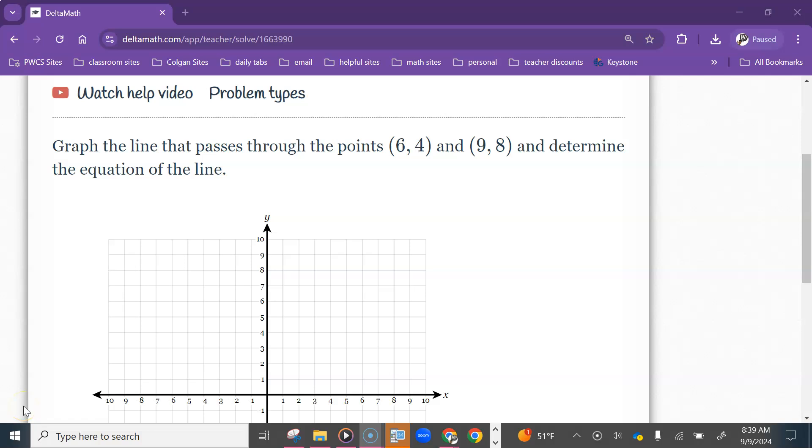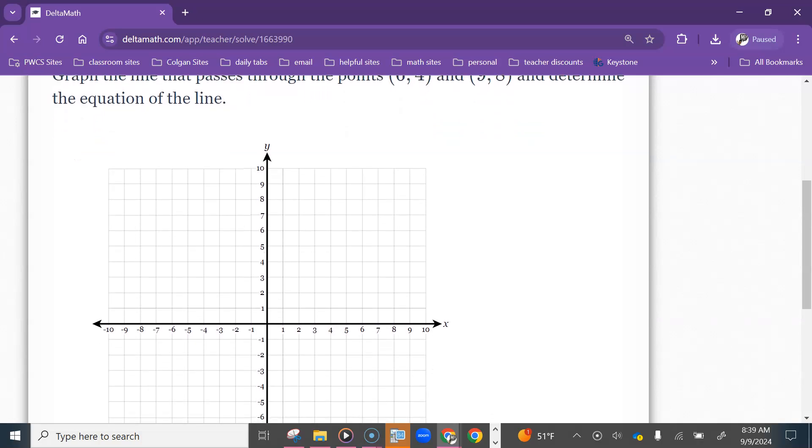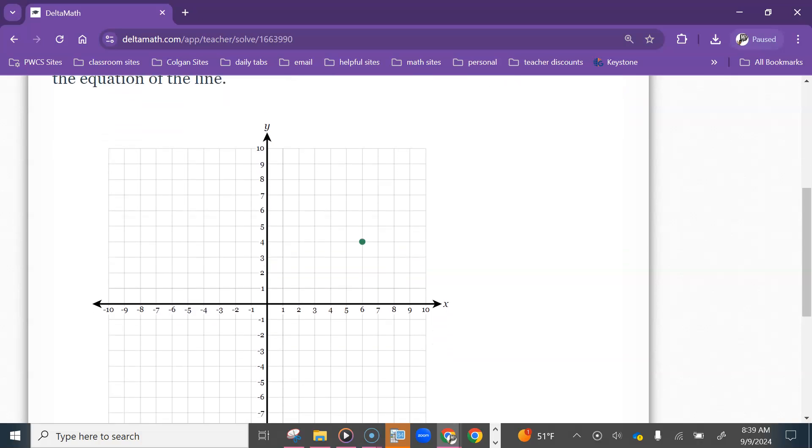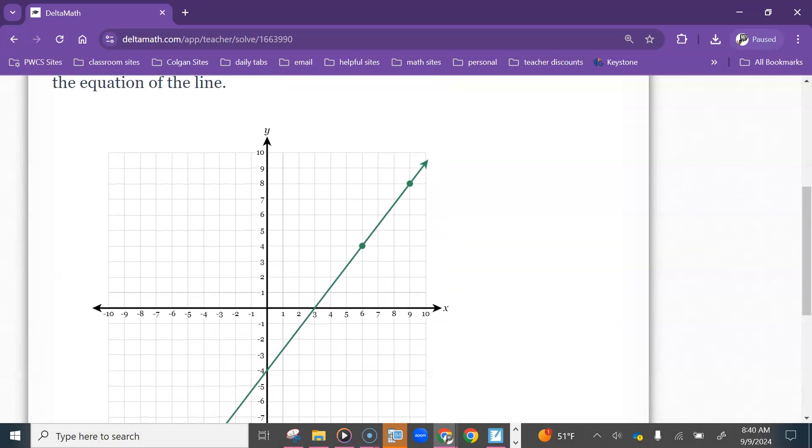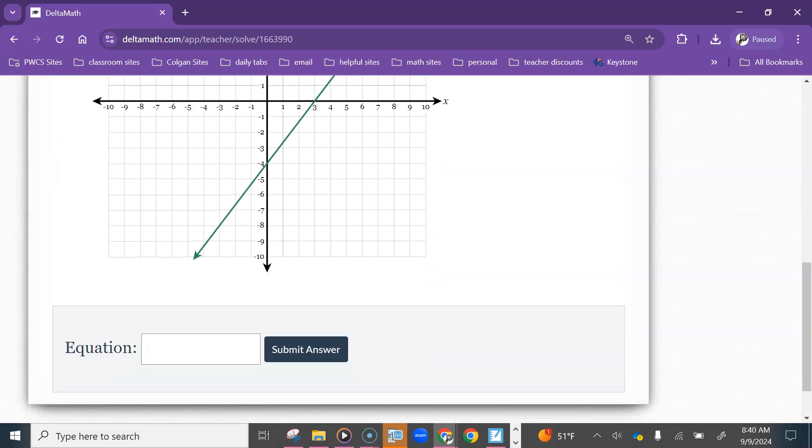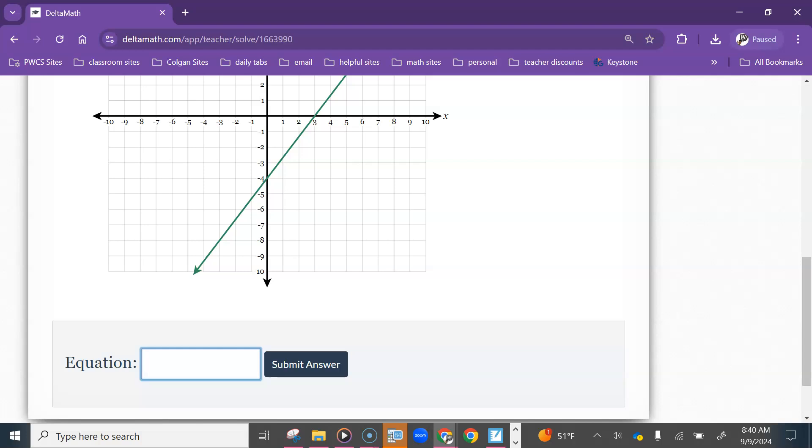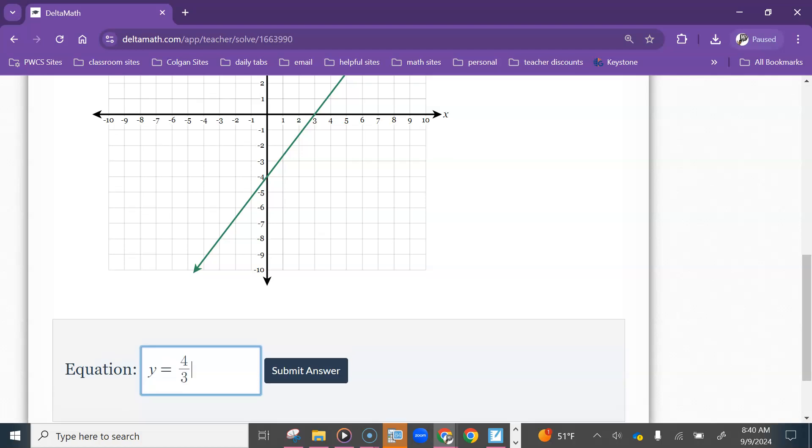So in this one, we would start at these two points: 6, 4 and 9, 8. It's going to make a line and then it wants us to write the equation of that line. So we should find the slope of this. The slope is 4 thirds. And then we can see where it goes through the y-intercept at negative 4.